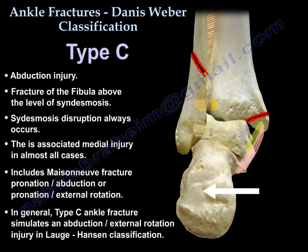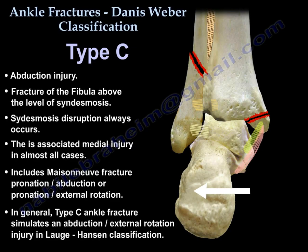Type C is an abduction injury with a fracture of the fibula above the level of the syndesmosis. Syndesmosis disruption always occurs, and medial injury is present in almost all cases. Type C fractures include the Maisonneuve fracture, pronation-abduction, or pronation-external rotation patterns. In general, Type C Weber ankle fractures simulate an abduction-external rotation injury in the Lauge-Hansen classification.